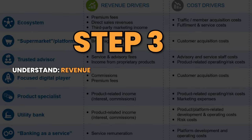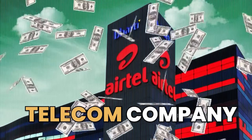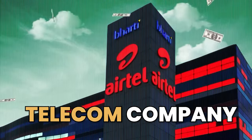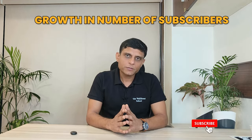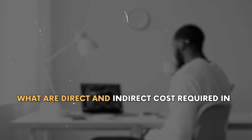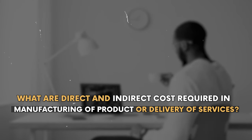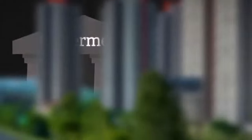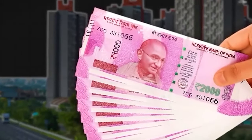Step 3: Understand the cost drivers and revenue drivers of the business for which you want to prepare a financial model. For example, if you want to estimate revenue for a telecom company, the revenue drivers would be growth in the number of subscribers, ARPU, churn rate, etc. Cost drivers include direct and indirect costs such as cost of goods sold, salaries, selling and general marketing expenses, admin costs, and other costs required to earn revenue.